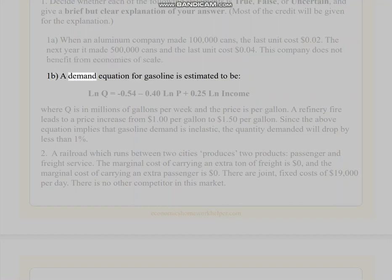1b. A demand equation for gasoline is estimated to be Ln Q equals -0.54 - 0.40 Ln P + 0.25 Ln income, where Q is in millions of gallons per week and the price is per gallon. A refinery fire leads to a price increase from $1 per gallon to $1.50 per gallon. Since the above equation implies that gasoline demand is inelastic, the quantity demanded will drop by less than 1%.